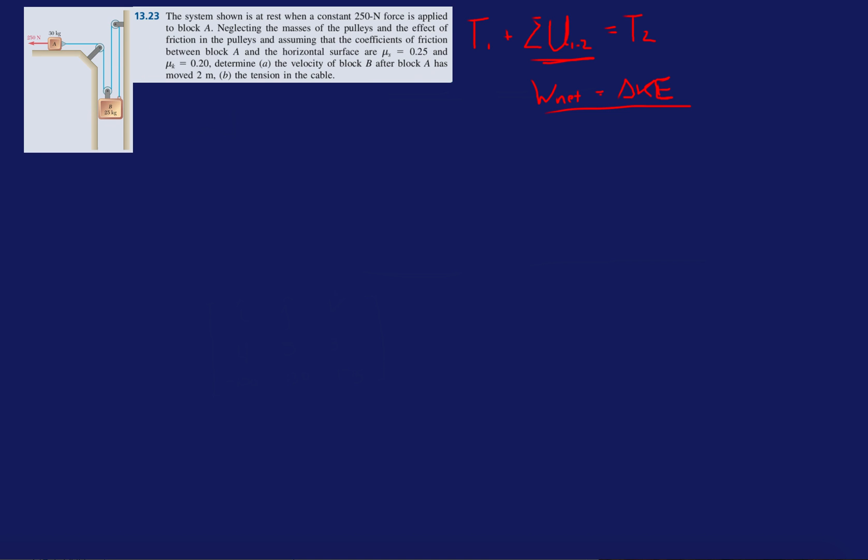Alright so we're gonna apply this theorem for this problem. In this problem they're asking for the velocity of block B after block A has moved two meters. To get started let's first form a relationship between the accelerations of block A and block B. This is due to the datum over here so we're gonna form a datum here.